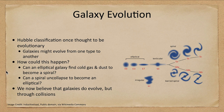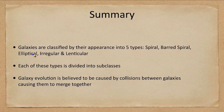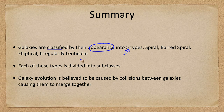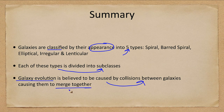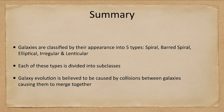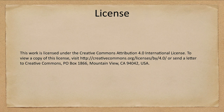In summary, galaxies are classified by their appearance into five types: spiral, barred spiral, elliptical, irregular, and lenticular. Each type is divided into subclasses, and galaxy evolution is caused by collisions and mergers between galaxies. That concludes this lecture on galaxy types — we'll be back next time for another topic in astronomy. Have a great day, everyone, and I will see you in class.